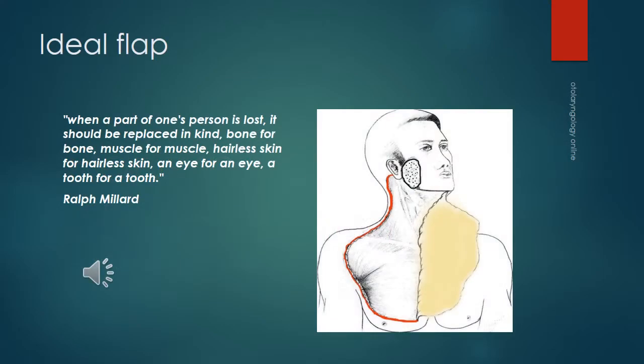The definition for an ideal flap was provided by Ralph Millard. It says that when a part of one's person is lost, it should be replaced in kind — bone for bone, muscle for muscle, hairless skin for hairless skin, an eye for an eye, a tooth for a tooth.